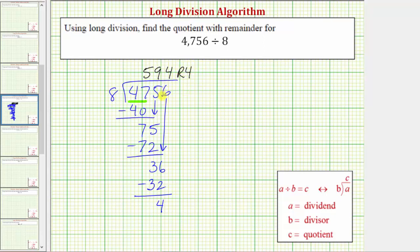Another way to express this to understand the meaning is this quotient is telling us that 594 times 8 plus 4 equals 4,756. The quotient times the divisor plus the remainder equals the dividend.